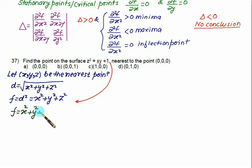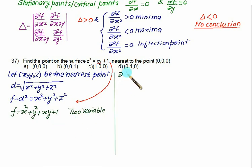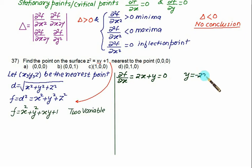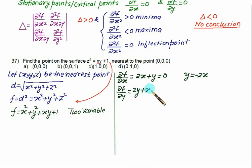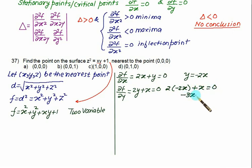This is now a two-variable problem, so we find stationary points using ∂f/∂x = 0 and ∂f/∂y = 0. We get ∂f/∂x = 2x + y = 0, so y = −2x. Similarly, ∂f/∂y = 2y + x = 0. Substituting y = −2x gives 2(−2x) + x = −3x = 0, so x = 0, and therefore y = 0.